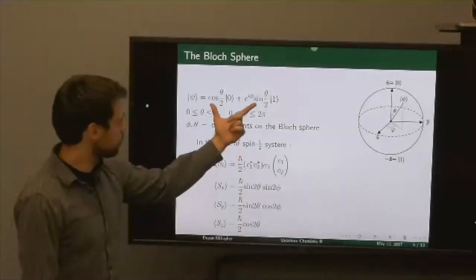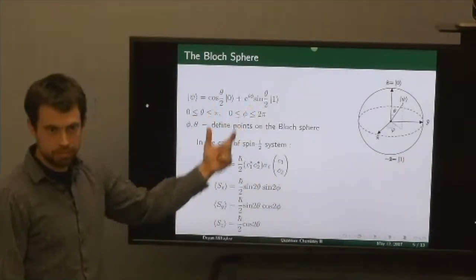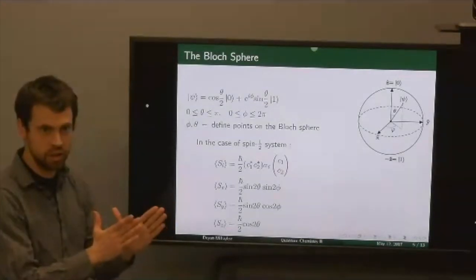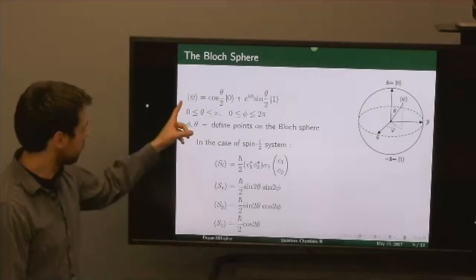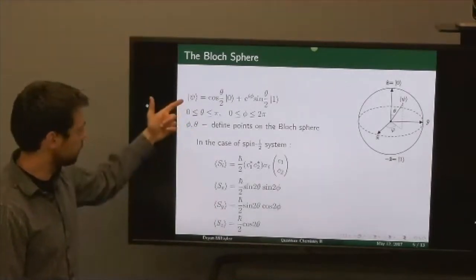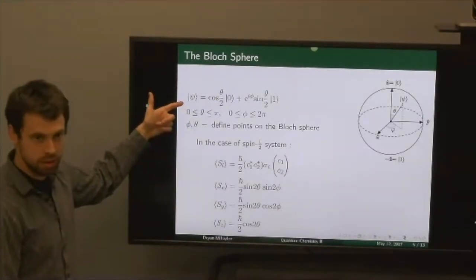So this is a solution to a very general Hamiltonian, a very general H naught. The solution is kind of lengthy, but this is a very general result that comes out.